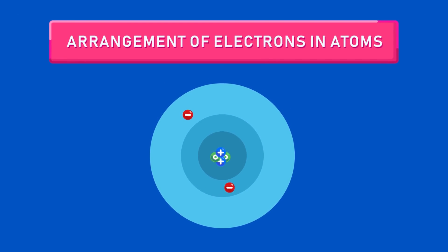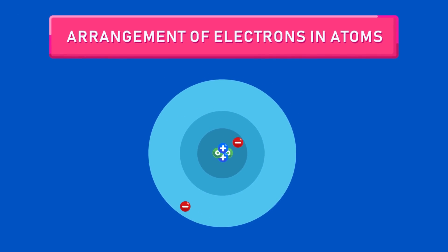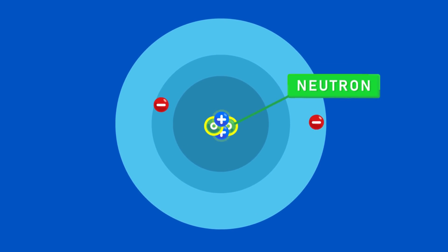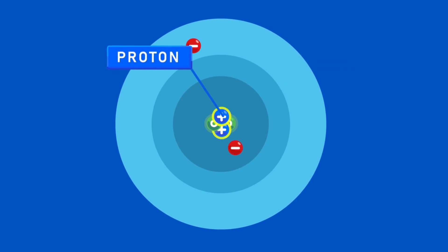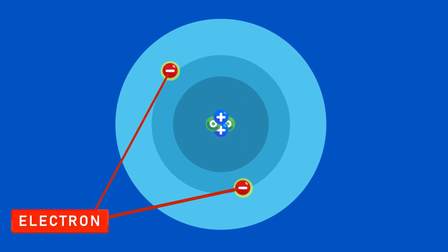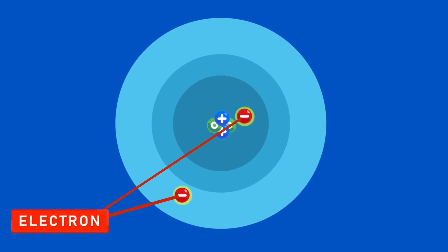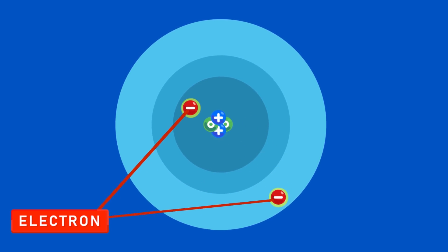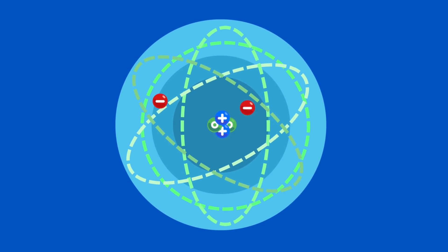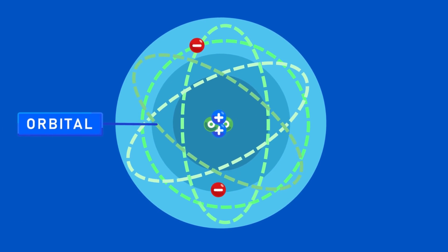Arrangement of Electrons in Atoms. An atom consists of a nucleus, which contains neutrons and protons, and electrons — as many as protons — that move randomly around the nucleus in an area called an orbital.